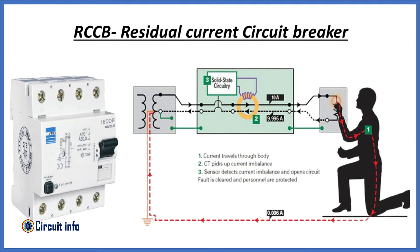The next device is RCCB. The full form of RCCB is Residual Current Circuit Breaker. It is compulsory to install an RCCB in your home. RCCB is the safest device to detect and trip against electric leakage current, ensuring protection against electric shock caused by indirect contact. If you have an RCCB connected in your circuit and you touch the phase supply, you will not feel any electric shock because the RCCB will trip instantly.